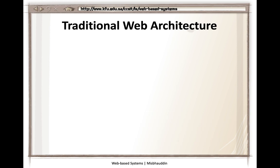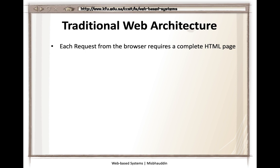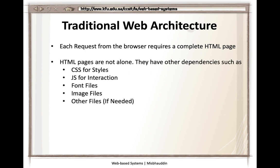Each request from the browser requires a complete new page. But an HTML page is not just one file — it comes with many things inside it. A single page can have CSS for styles, JavaScript for interaction, font files if the font is not available on the web, image files needed to show the page, and other files like video files or data files.